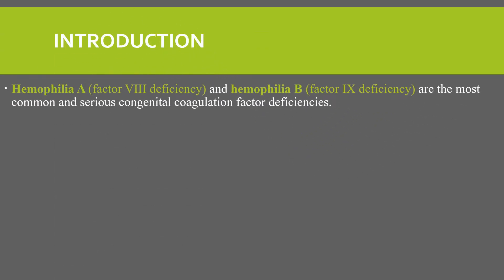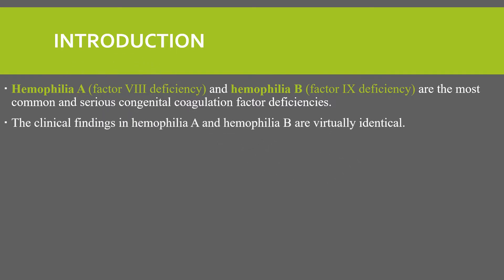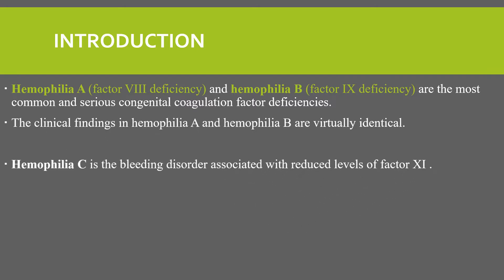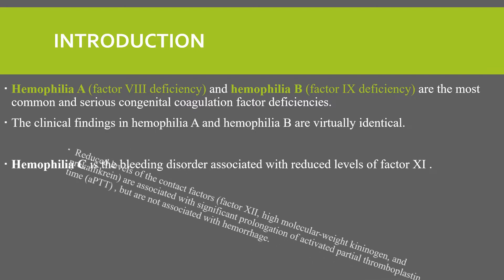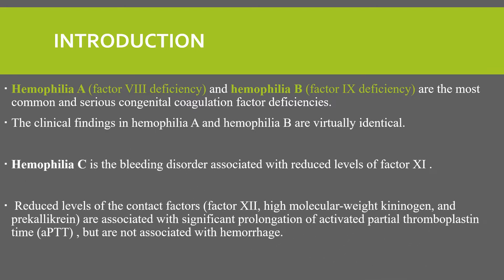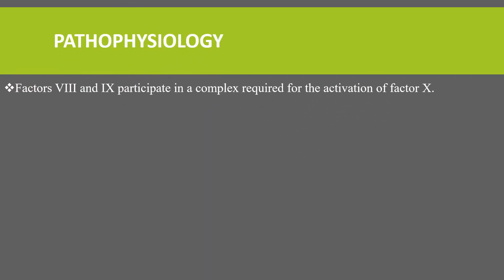Today's topic is about hemophilia. Hemophilia A, which is due to factor 8 deficiency, and hemophilia B, which is due to factor 9 deficiency, are the most common congenital coagulation factor deficiencies. The clinical findings in hemophilia A and hemophilia B are virtually identical. Contact factors — factor 12, high molecular weight kininogen, and pre-kallikrein — are associated with significant prolongation of activated partial thromboplastin time, but they are not associated with hemorrhage.